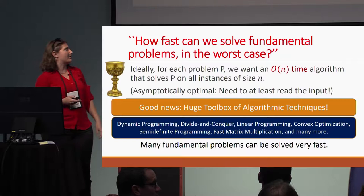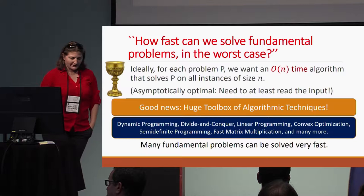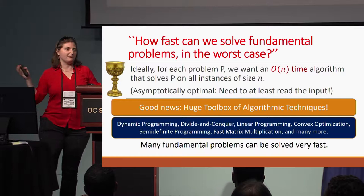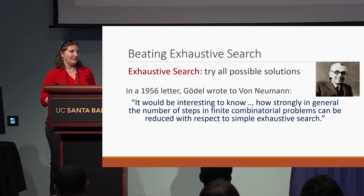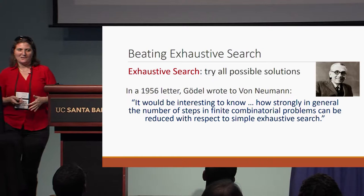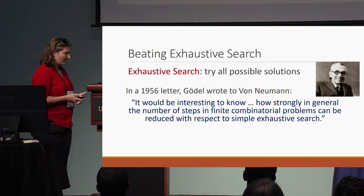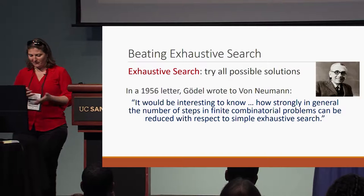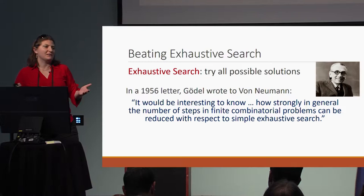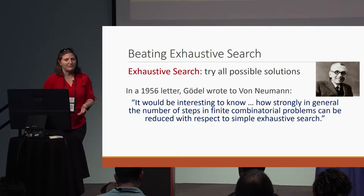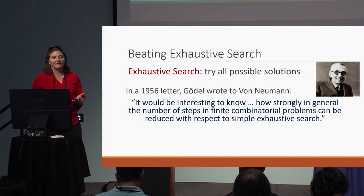The good news is we have a huge toolbox of techniques, and many problems we can solve very fast. You give me a problem, I'll throw all these techniques at it and come up with some algorithm. Unfortunately, there's also this big algorithm called exhaustive search — this is the first thing you try. For all problems in NP, you have a natural notion of a verifier: when you have a solution, the verifier checks it. This defines the notion of a search space, and the exhaustive search algorithm just brute-forces over it. Unfortunately, for many problems, this is the only way we know how to solve them — there's no significantly faster algorithm.